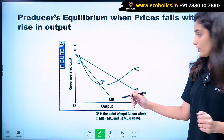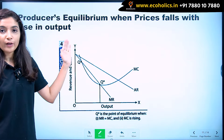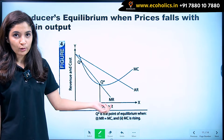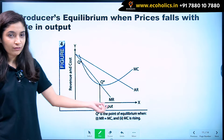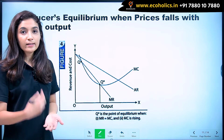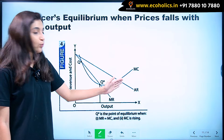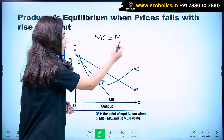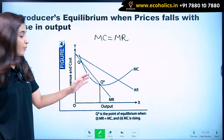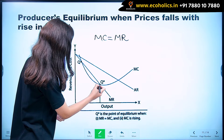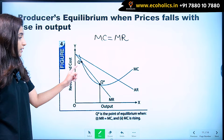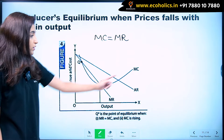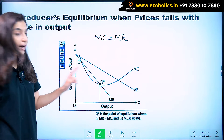Now coming on to the diagrammatic representation. In case of imperfect competition, our average revenue curve is downward sloping and our marginal revenue curve is also downward sloping, and the marginal revenue curve lies below the average revenue curve. Now, at what point is the producer at equilibrium? The producer will be at equilibrium when marginal cost equals marginal revenue. But in this diagram, the marginal cost curve intersects the marginal revenue curve at two different points.